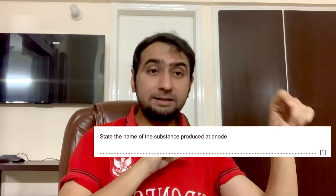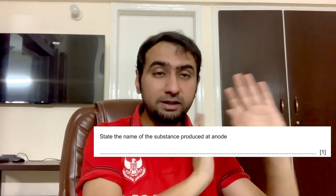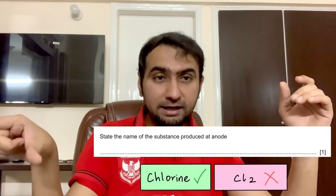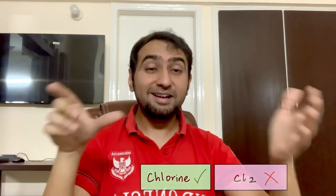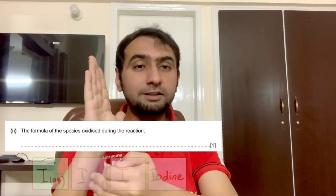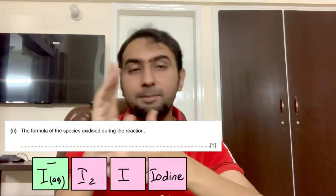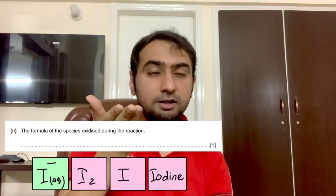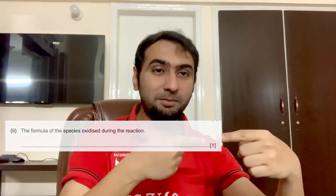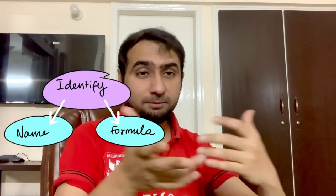Another thing to keep in mind: if a question asks you to write the formula, write the formula. If it asks for the name, write the name. For example, if the question says 'state the name of the compound produced at the anode during electrolysis' and you write the formula, that is technically wrong. Similarly, if I ask for the formula of the species oxidized in a reaction, write the formula with the charge — you can't just name it. However, if I ask you to 'identify', both the name and the formula are acceptable.